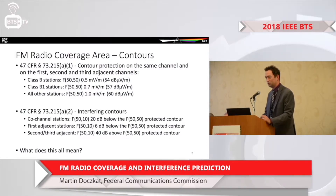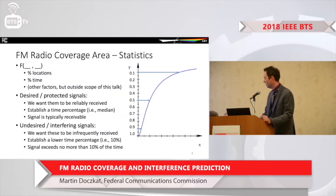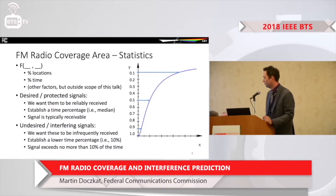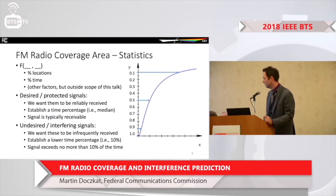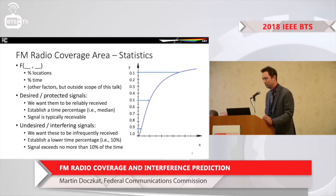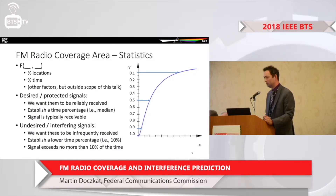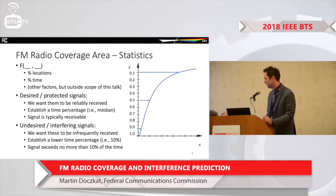This may be a bit of a review for radio scientists or consulting engineers in the room. The F50/10 or F50/50 represents percent of locations and percent of time — that is, the percent of time or locations that a signal exceeds a certain threshold. For desired or protected signals, we want reliable reception, so we use the median time percentage. For F50/50, the signal is typically receivable at those locations. Undesired signals should be received less frequently, so we use F50/10 — meaning the signal is exceeded no more than 10 percent of the time.